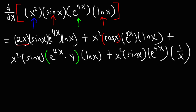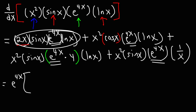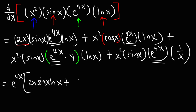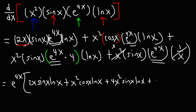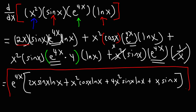Now let's simplify. We can factor out the GCF, e to the 4x, since it appears in all four terms. Factoring it out leaves: 2x sine x times ln x, plus x squared cosine x ln x, plus 4x squared sine x ln x, plus x squared sine x times 1 over x — which simplifies to x sine x. So the final answer is e to the 4x times the quantity: 2x sine x ln x plus x squared cosine x ln x plus 4x squared sine x ln x plus x sine x.